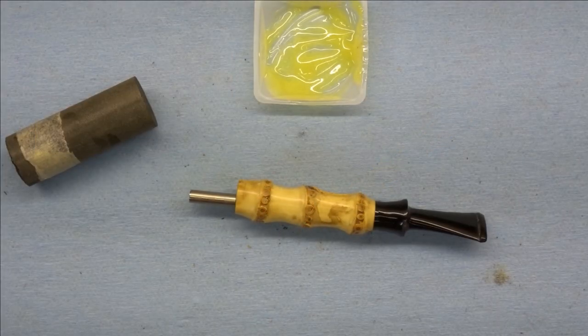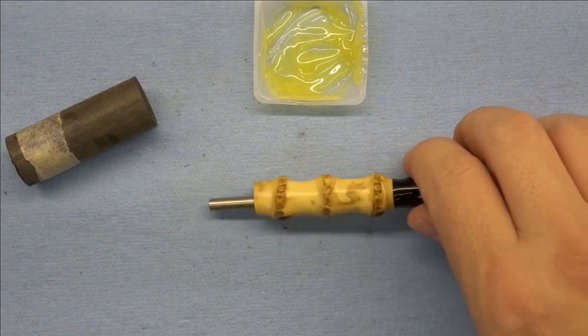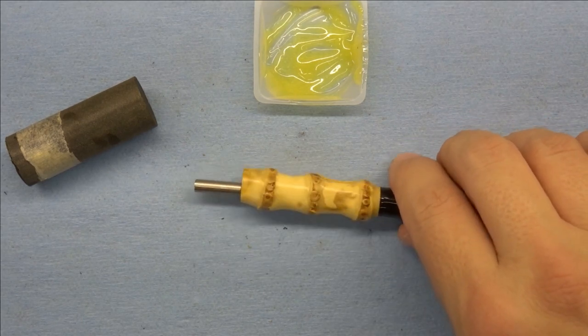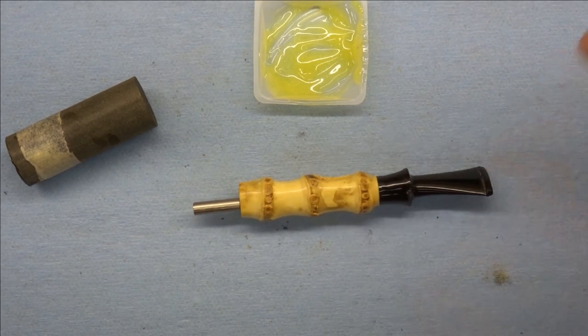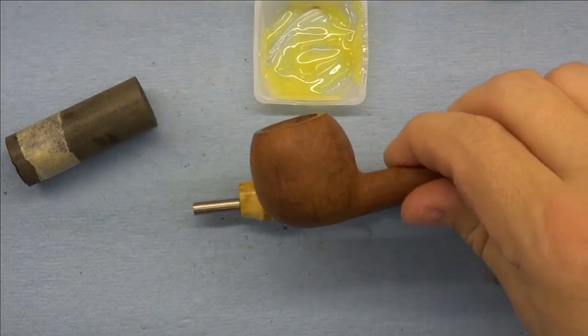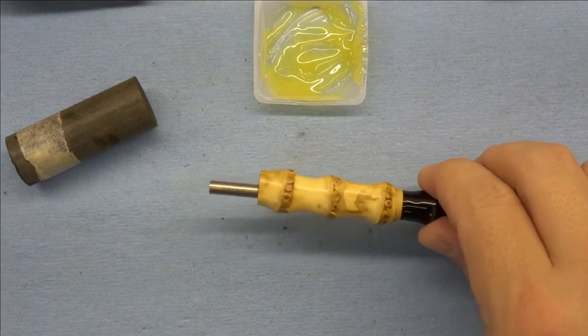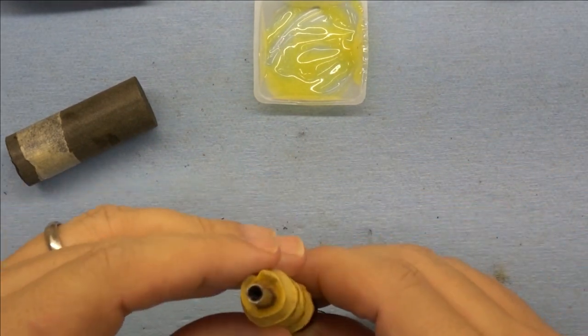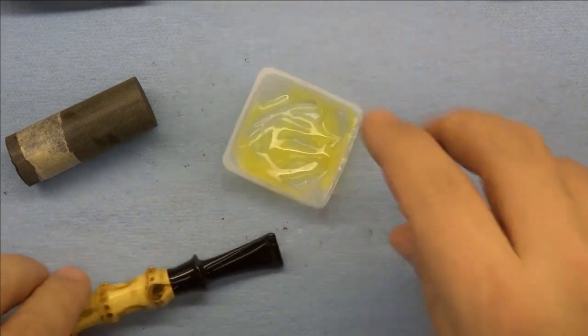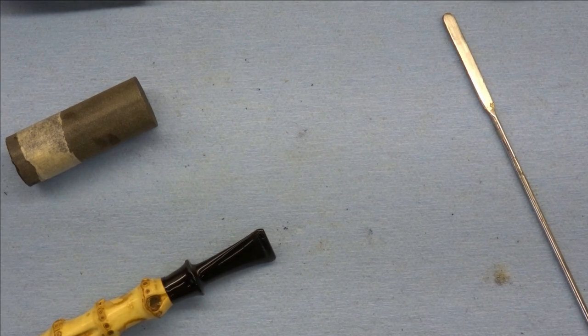Hello and welcome to part 3 of our series on the remaking of this bamboo shanked pipe, where we're replacing the old stummel with a new stummel, as odd as that sounds. So we've allowed the epoxy to cure here. This is the leftover rock solid, so we're good with that.